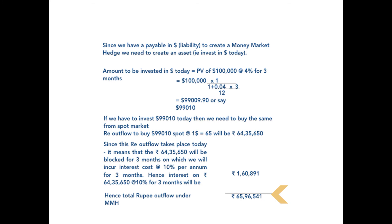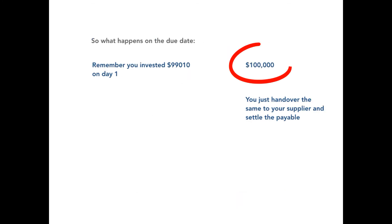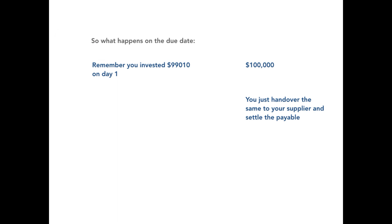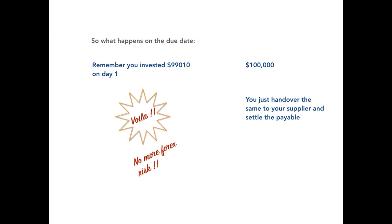Now we need not worry about the final outflow of $1,00,000, since that will be met out of the maturity of the investment of $99,010 which will give us $1,00,000 on maturity. So now we see how entering into a money market hedge can eliminate the foreign exchange risk which is associated with an international transaction.